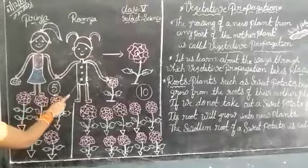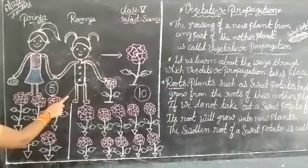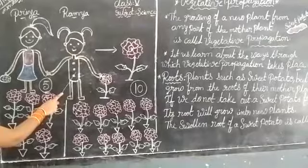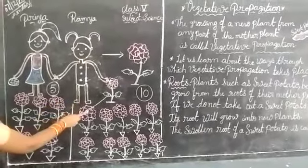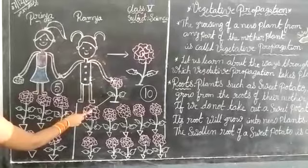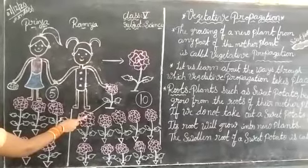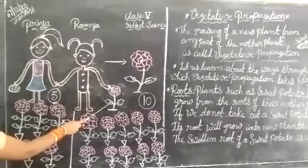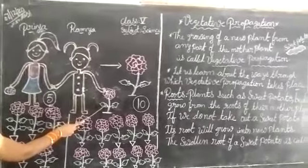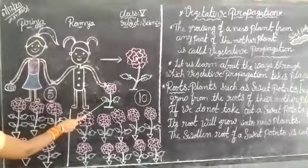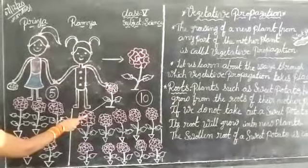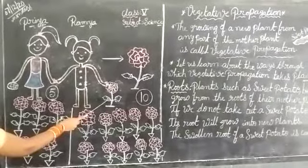Priya asked Ramya how she grew so many rose plants from just one rose plant. Ramya said it was with the help of vegetative propagation. Rose plants grow from stem cutting. In stem cutting, a stem is cut into smaller pieces, these pieces are planted in the soil, and after a few days they grow into a new plant.